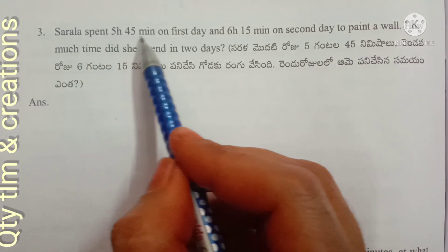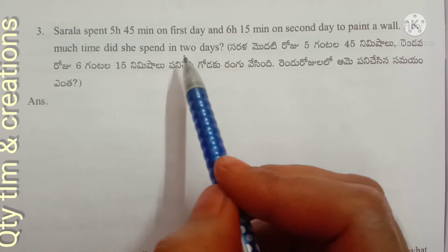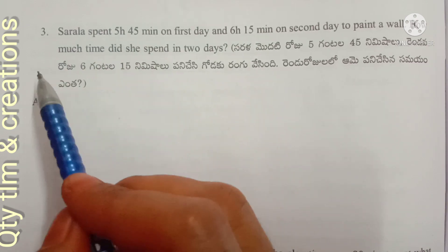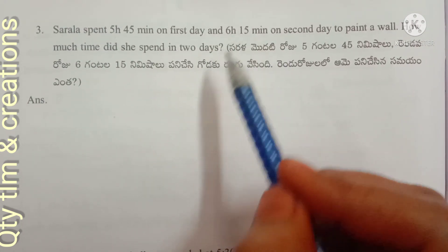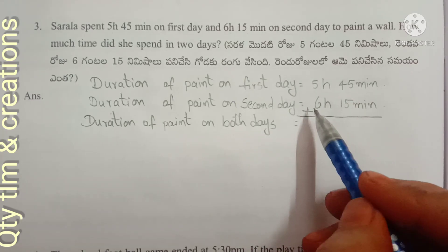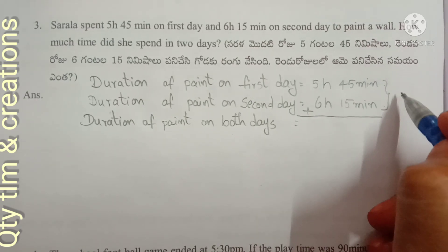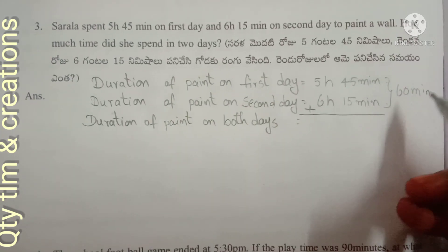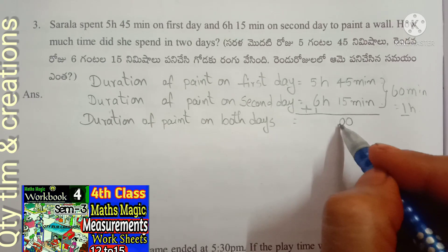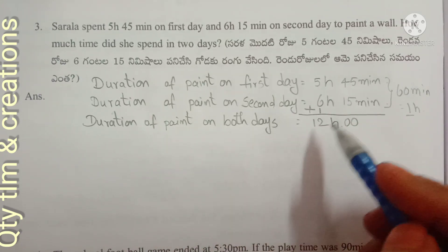Next: Sarla spent 5 hours 45 minutes on the first day and 6 hours 15 minutes on the second day to paint a wall. How much time did she spend in 2 days? We add 5 hours 45 minutes and 6 hours 15 minutes. First add the minutes: 45 plus 15 equals 60 minutes, which equals 1 hour. Carry 1 hour forward; write 0 in minutes. Then 5 plus 6 plus 1 equals 12 hours. Total duration is 12 hours.